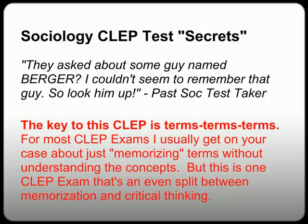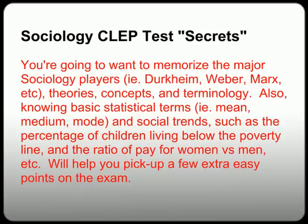Sociology CLEP test secrets. As one past test taker noted: 'They asked about some guy named Berger — I couldn't seem to remember the guy, so look him up.' That quote pretty much sums up this exam. The key to this CLEP is terms, terms, terms, and more terms. You'll want to memorize the major Sociology players, theories, concepts, and terminology. Also knowing basic statistical terms like mean, median, and mode — nothing advanced — and social trends such as the percentage of children living below the poverty line and the ratio of pay for men versus women will help you pick up a few extra easy points.